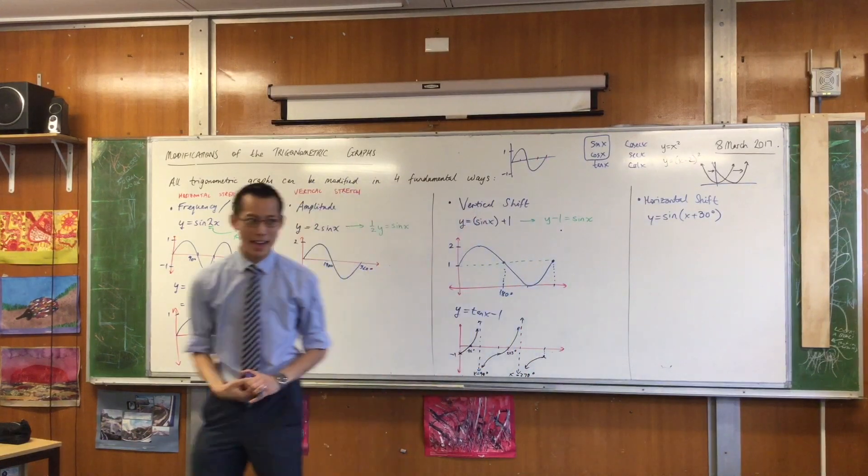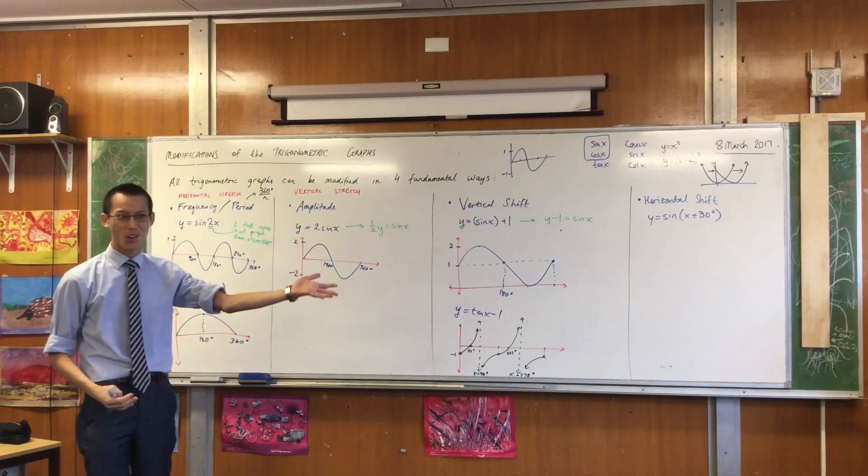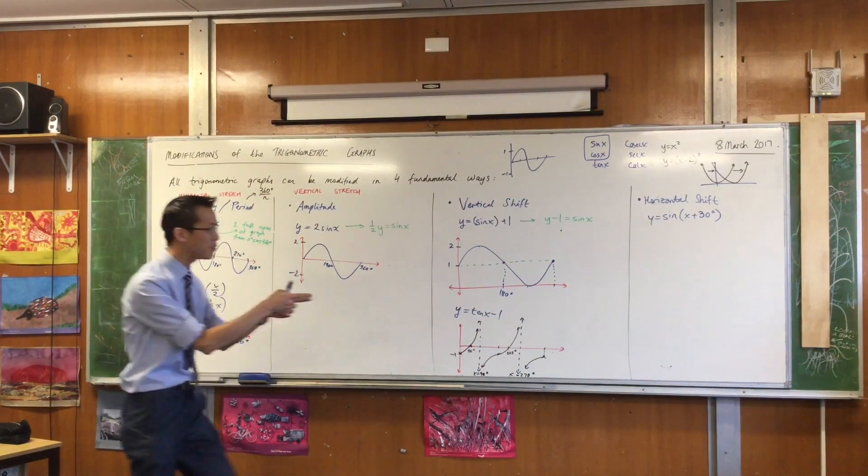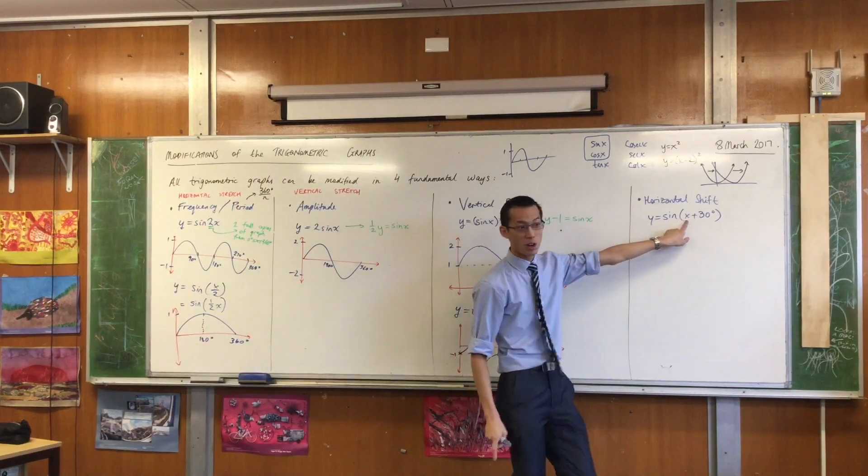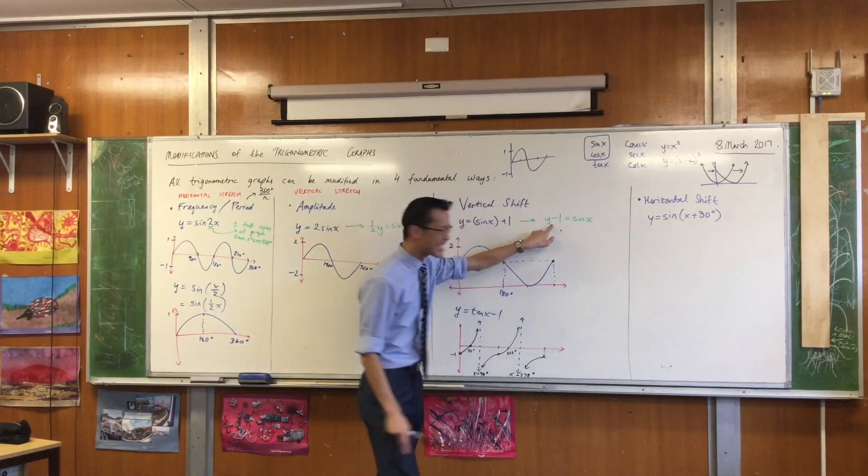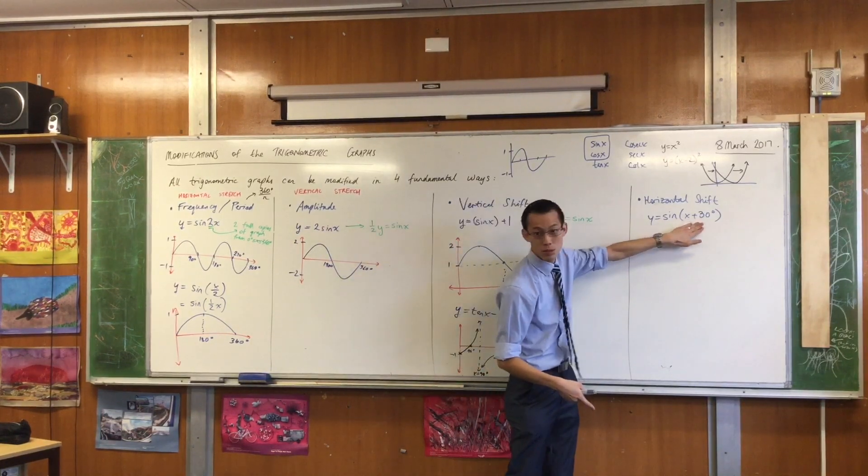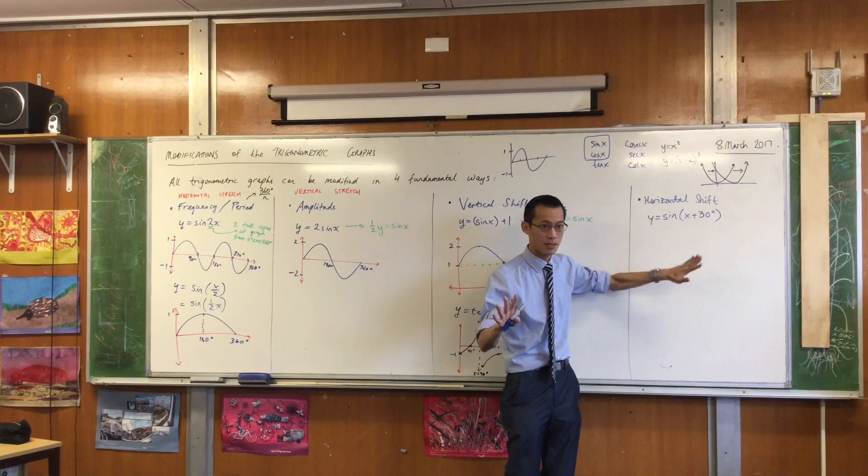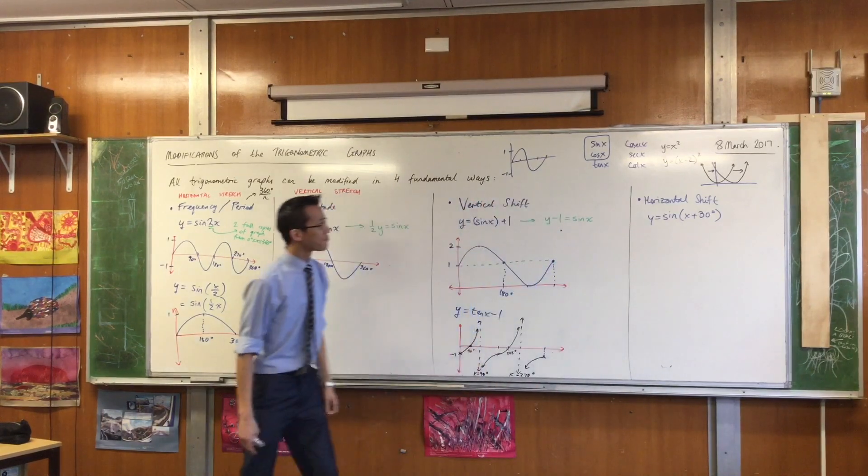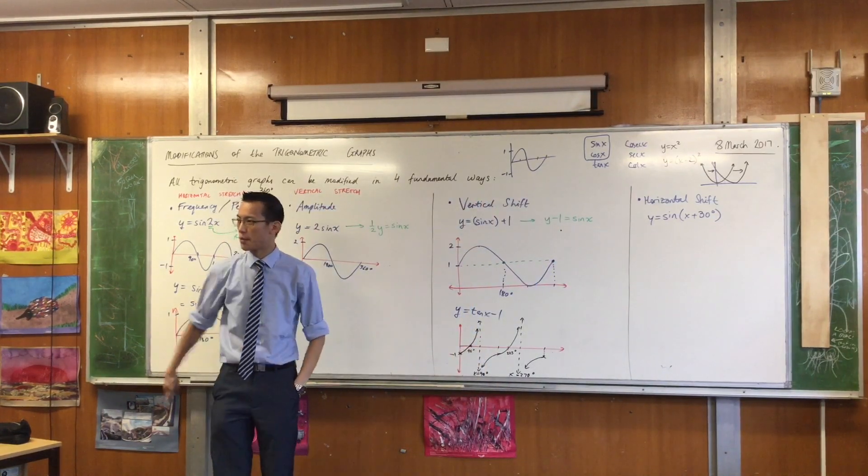So, can you see why now? Have I trained you by the time we've gotten to the fourth column over here? Why that has to be a horizontal shift, whereas this has to be a vertical shift. Can you see where the numbers are playing around and what they're close to and therefore what they're modifying? Does that make sense?